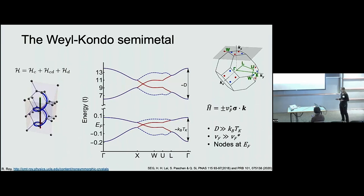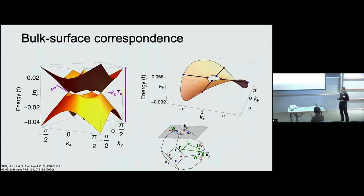So before I explain how these nodes arise at the Fermi energy. We can also look at the spectrum at least along these planes of the Brillouin zone.